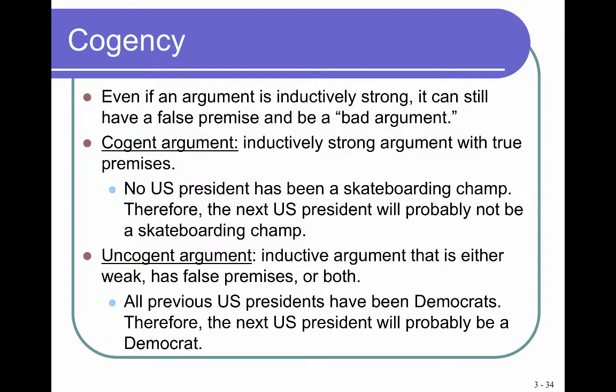Now we're going to add truth into the mix in inductive reasoning. Inductive arguments are either cogent or uncogent. A cogent argument is inductively strong and has all true premises. An uncogent argument is either weak, has false premises, or both. Here's a cogent argument: no U.S. president has been a skateboarding champ — that's true — therefore the next U.S. president will probably not be a skateboarding champ. That conclusion is very likely the case. Here's an uncogent argument: all previous U.S. presidents have been Democrats, therefore the next U.S. president will probably be a Democrat. Obviously it is not true that all previous U.S. presidents have been Democrats — it's a false premise and the conclusion cannot be accepted.